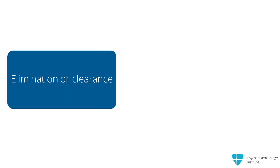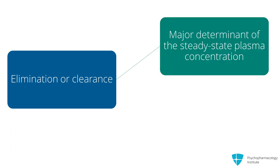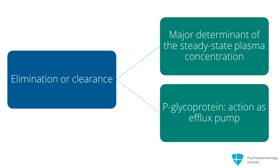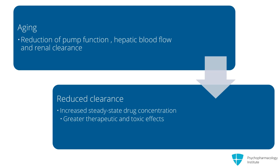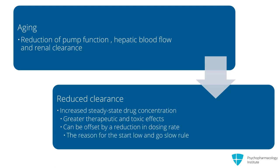Now talking about drug elimination or clearance — this is the last pharmacokinetic process. Drug clearance is the rate, usually expressed in cubic centimeters per minute, at which a drug is removed from the circulation by hepatic metabolism plus renal excretion. Clearance is the major determinant of the steady-state plasma concentration of a drug. P-glycoprotein promotes drug clearance from the liver and the kidneys through its action as an efflux pump — a pump-out pump. With aging, not only is pump function reduced, but hepatic blood flow and renal clearance also are reduced. Reduced drug clearance is associated with increased steady-state drug concentration with greater therapeutic and toxic effects. Reduced drug clearance can be offset by a reduction in dosing rate, and this is the reason for the start-low-and-go-slow rule in geriatric prescribing.